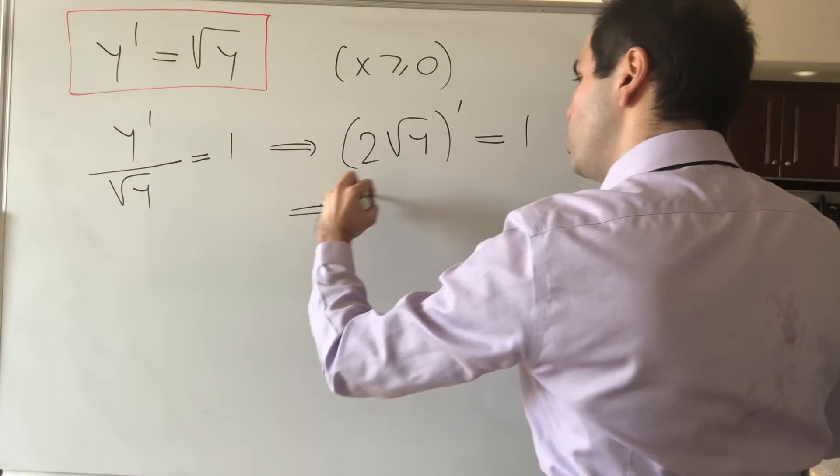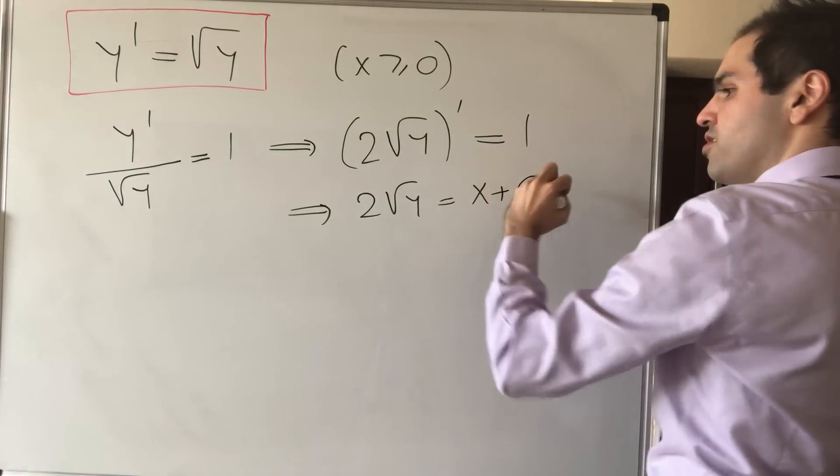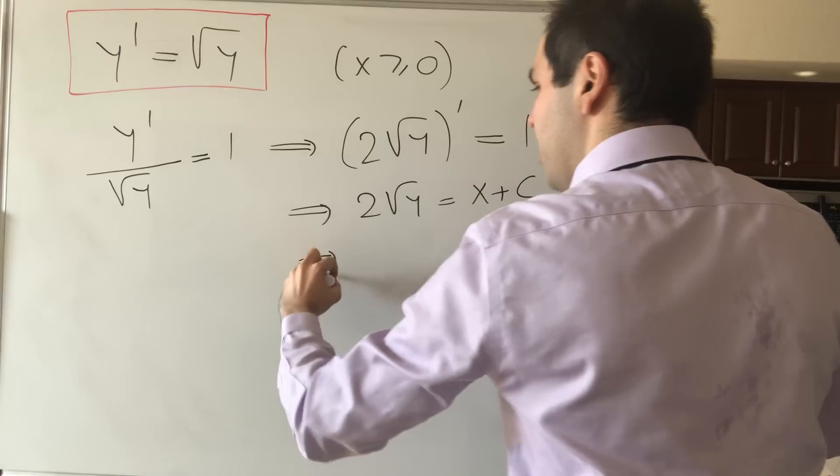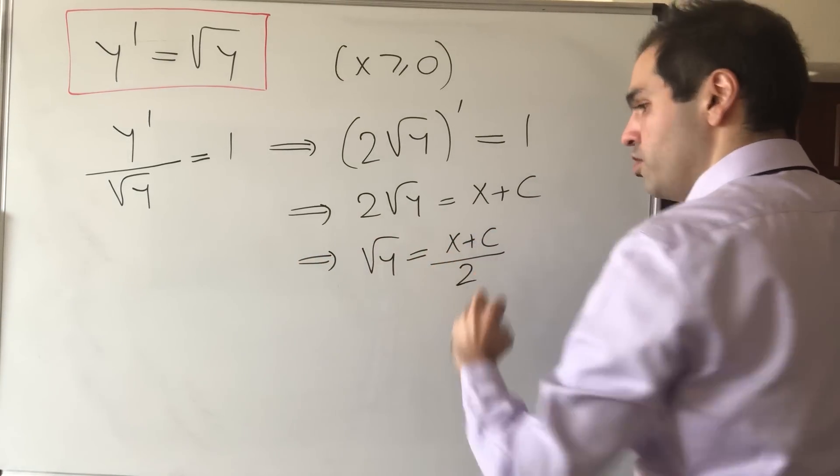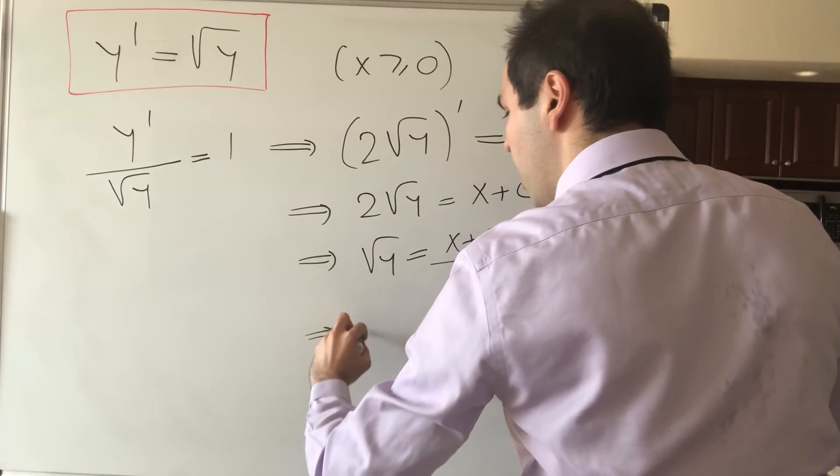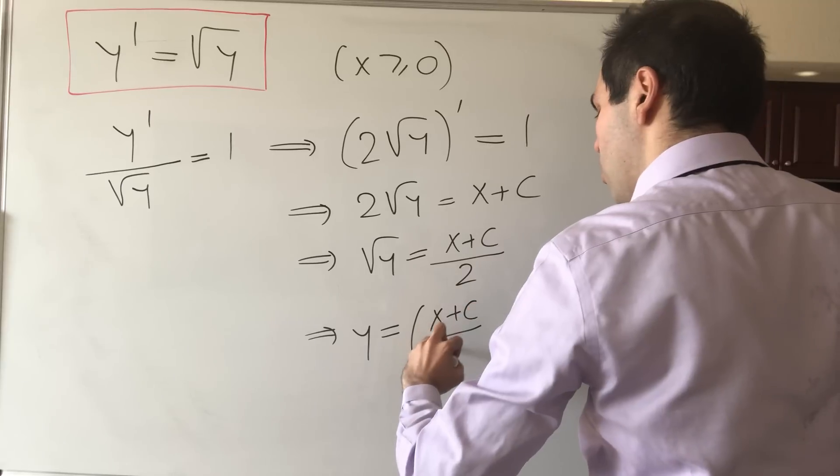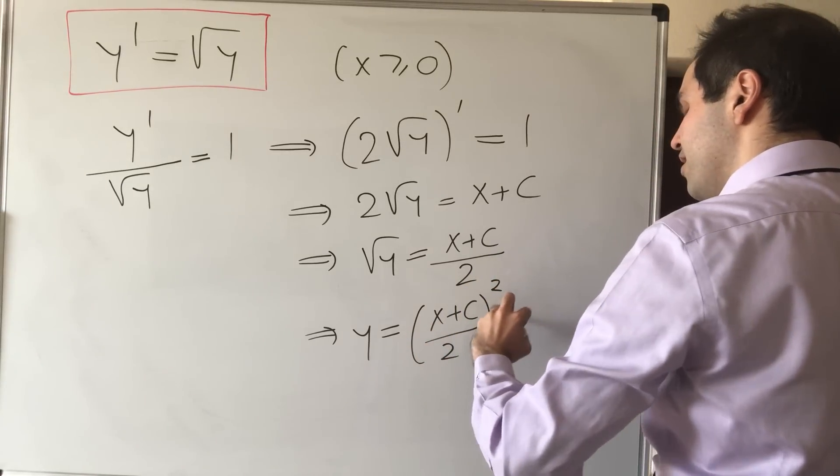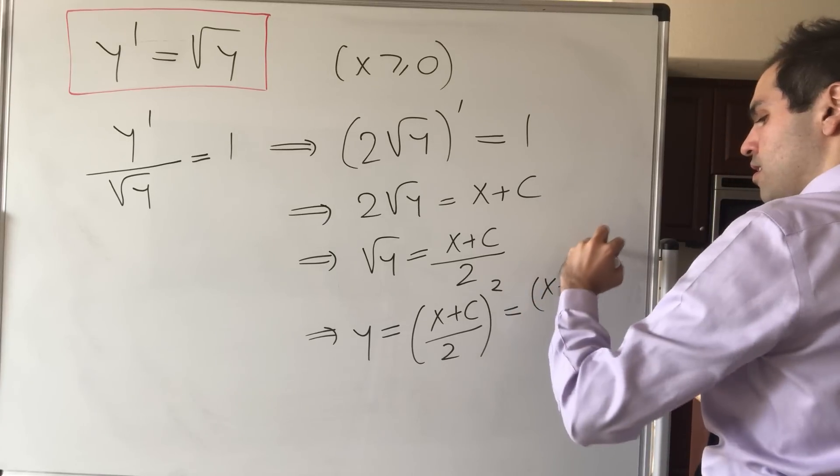And then 2 square root of y, if you integrate, that is x plus some constant. And then square root of y equals x plus some constant over 2. And then to get y, you just square that. So x plus c over 2 squared. And that's x plus c squared over 4.